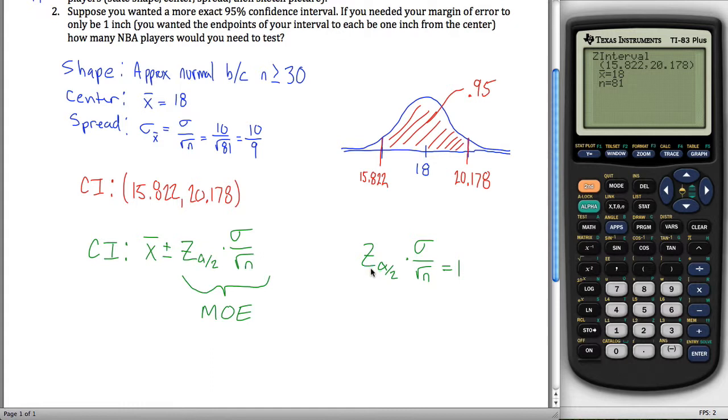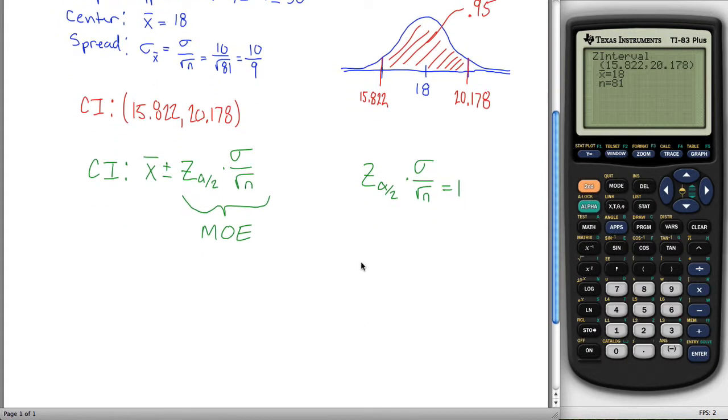z sub alpha over 2 is something we've seen before. What that's asking is, what z score would you need to only have .025 in this upper tail? So what I'm trying to say here is alpha, which is 1 minus our confidence level, is .05. So alpha divided by 2 is .025.